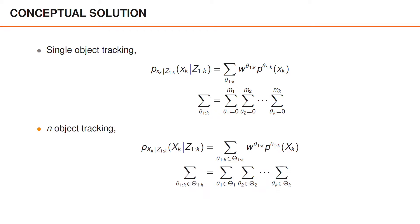In n-object tracking, we have a general posterior of the same type of format: a mixture density with different data association sequences, where we have a weight for each association sequence and a posterior density conditioned on that association sequence. Again, the weights are the probabilities of the data association sequences.